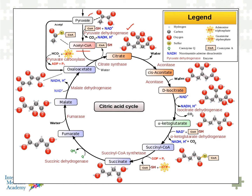Pyruvate dehydrogenase is a highly regulated enzyme. There are genetic disorders linked to pyruvate dehydrogenase deficiency, which can lead to lactic acid acidosis. If we successfully convert into acetyl coenzyme A, it becomes the substrate or coactivator of citrate synthase to help convert oxaloacetate — the last step of the Krebs Cycle — into citric acid.